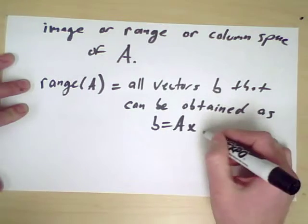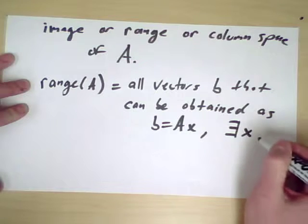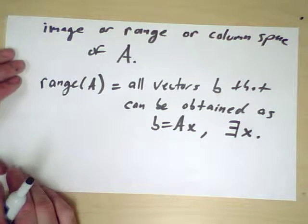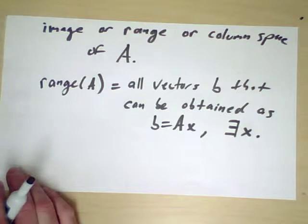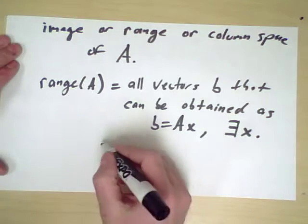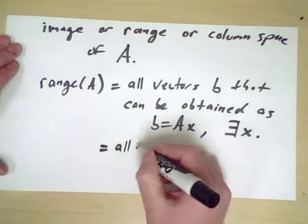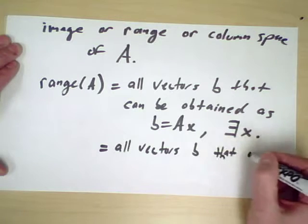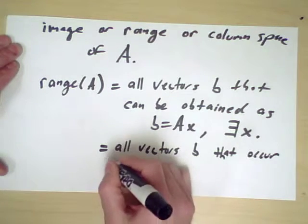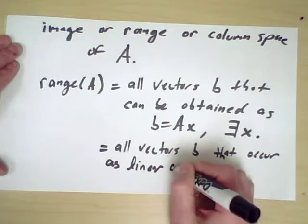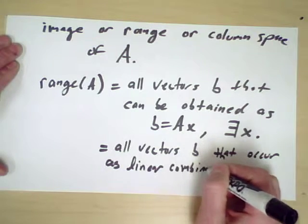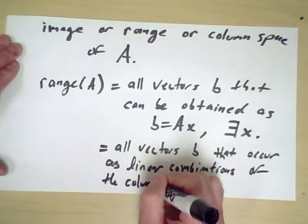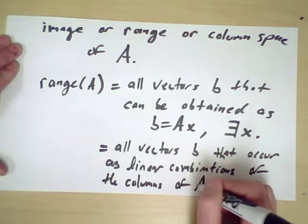So let's define the range of A to be all vectors b that can be obtained as b equals Ax for some x. By the previous discussion about working on the columns of A, this is the same thing as all vectors b that occur as linear combinations of the columns of the matrix A.